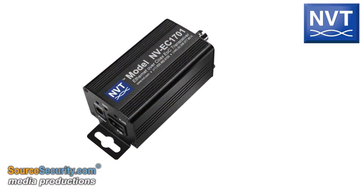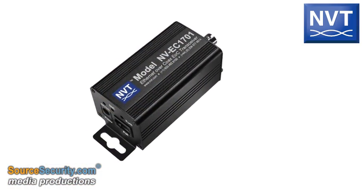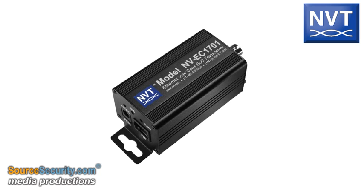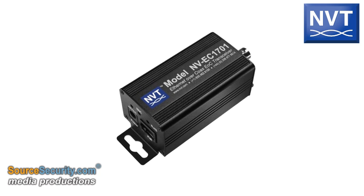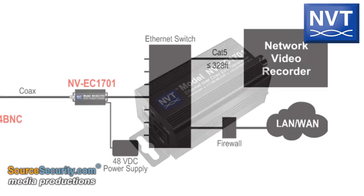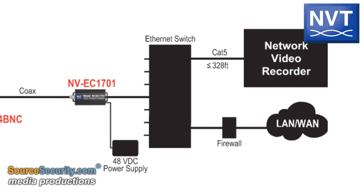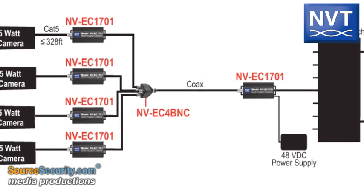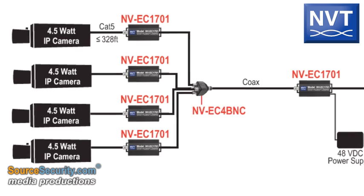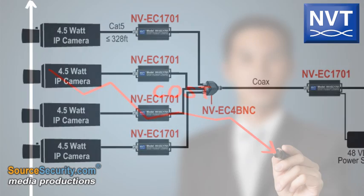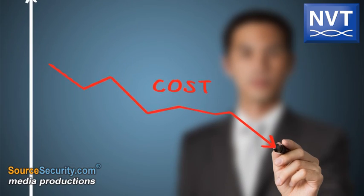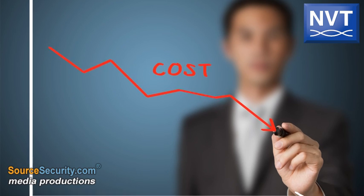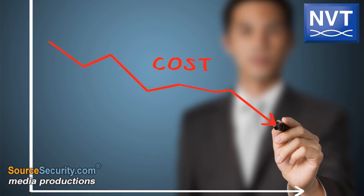NVT's Ethernet over Coax (EOC) transmission technology can dramatically reduce IP migration costs by allowing up to four IP megapixel cameras to be connected and powered over a single legacy CCTV network coax cable. This solution is typically one-third of the cost of upgrading to a UTP-based IP solution.